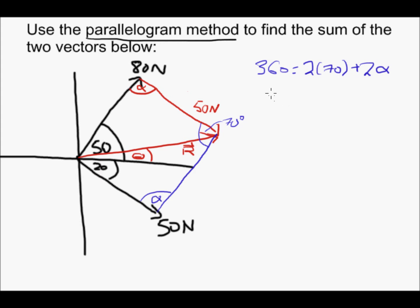So solving that 360 minus 140, which is 2 times 70, equals 2 times alpha. Alpha equals 360 minus 140 is 220 divided by 2, so alpha is 110.